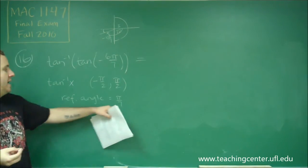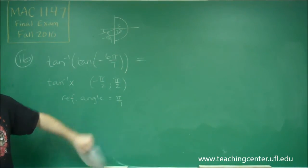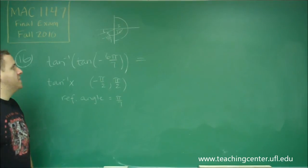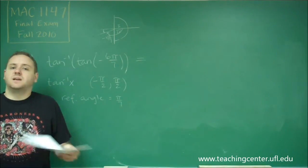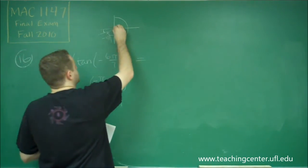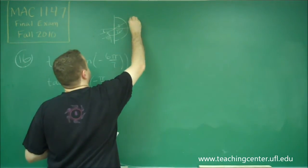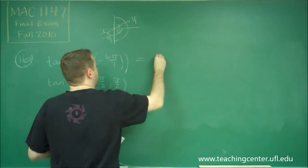So we want the angle pi over 7 reference angle in quadrant 1, and remember that if it's in quadrant 1, the reference angle just is the angle. So we have our angle of pi over 7, so that would be our answer here.